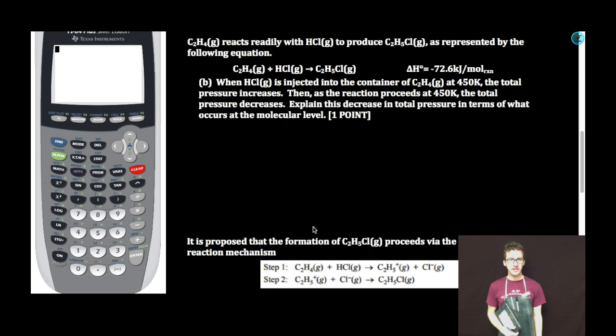C2H4 reacts readily with HCl to produce C2H5Cl as represented in the following equation. Part B. When HCl is injected into the container of C2H4 at 450 Kelvin, the total pressure increases. Then, as the reaction proceeds at 450 Kelvin, the total pressure decreases. Explain this decrease in total pressure in terms of what occurs at the molecular level.